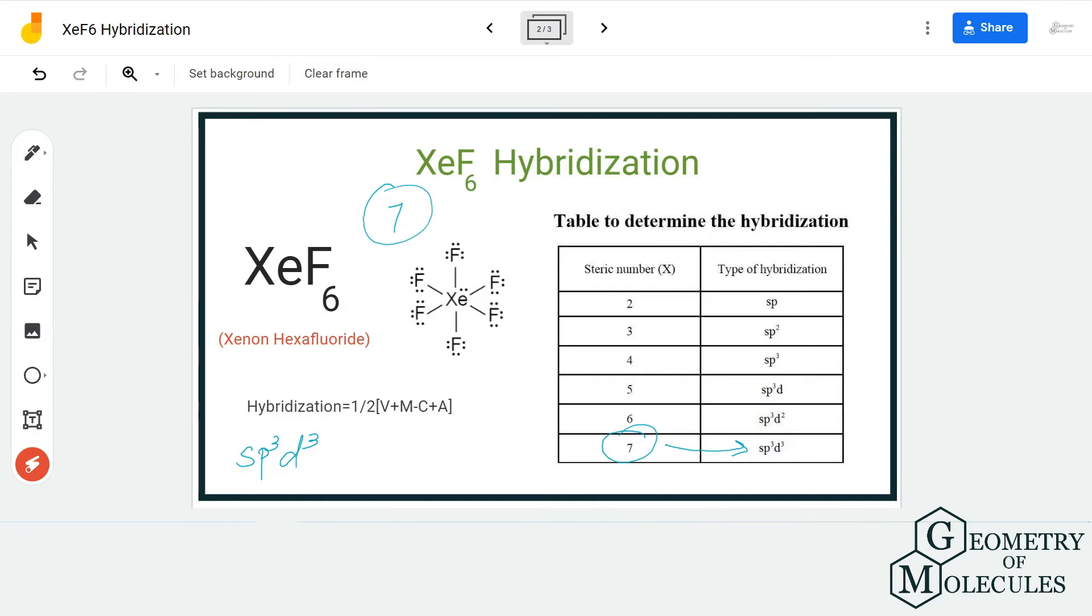So you can also use this formula. For hybridization, V means the number of valence electrons that this molecule has, M is the monovalent, C stands for positive charge, A stands for negative charge. This is a bit complex than just finding out the steric number, but some people do use this formula.